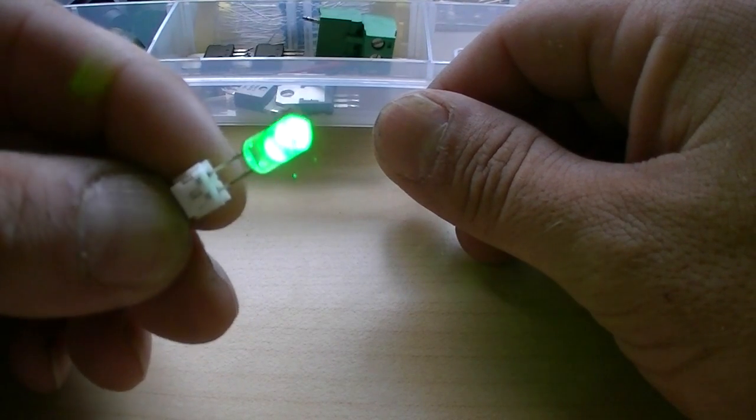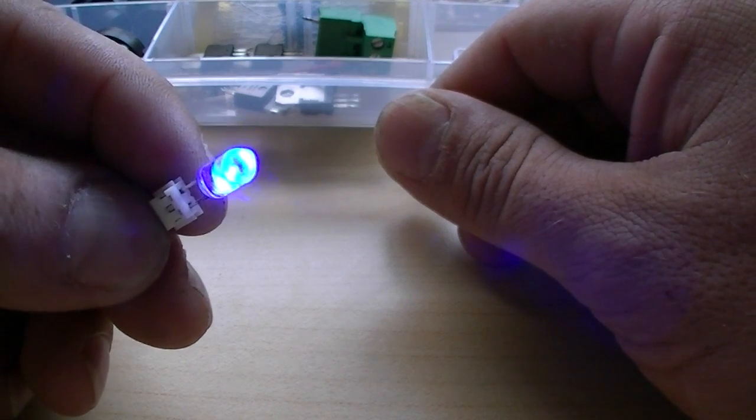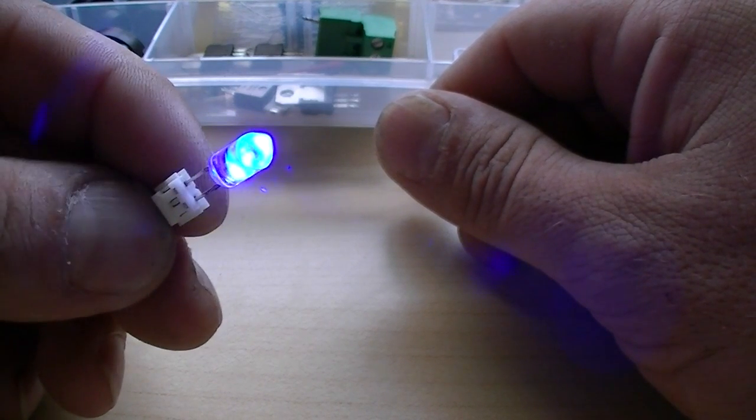And that's what that little chip inside there is for. This is actually a slow color-changing LED. It will sit here and cycle through.